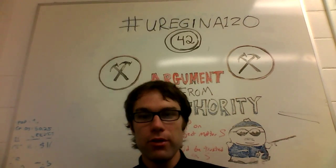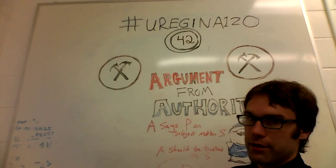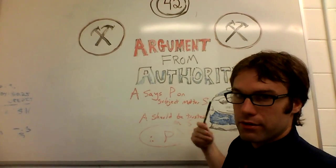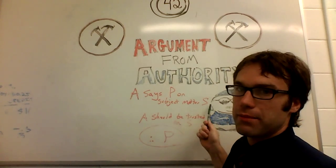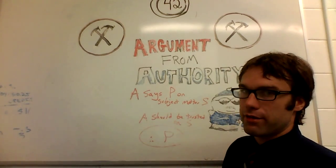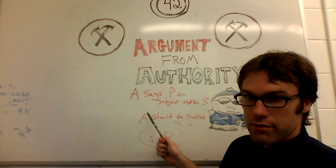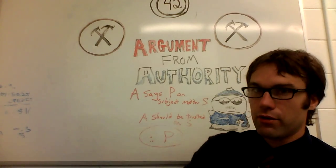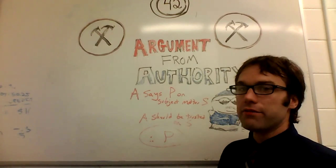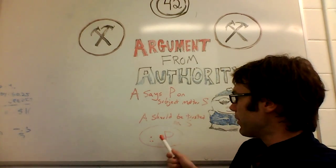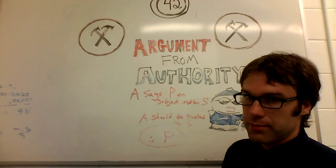The formal way of looking at it: A says P, or something on some subject matter S. A is the expert or the authority in this case. Step 2, A should be trusted on subject S, so they're a relevant authority, they're trusted in some regard, and then therefore P, the original claim, is true.